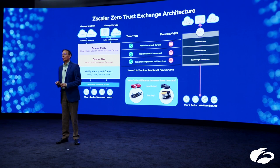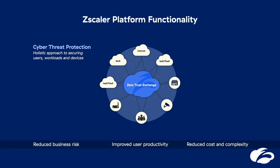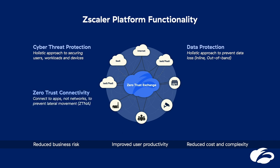Using the Zero Trust Exchange, we're doing four big areas of functionality. First, cyber threat protection — make sure you don't get compromised. Number two, data protection — a full holistic approach, because everything leaks to the internet and everything flows through us. In addition, we bring in zero-trust connectivity where your branches and offices are not on a routable network. And four, user experience. Our today's focus is about data protection in a holistic fashion.